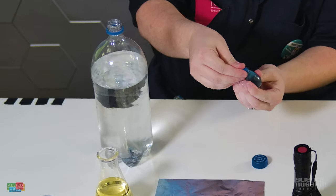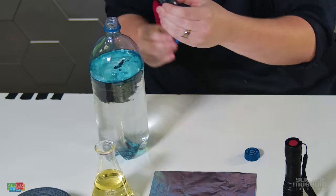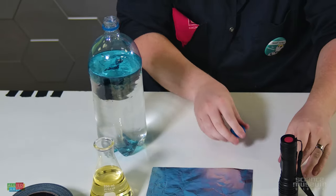First, we're going to start with this bottle, but we need to put some water in it. Fill the bottle three-quarters full with water. Just place a couple of drops of blue food coloring in the water. Shake the bottle well to make sure the water and food coloring mix.